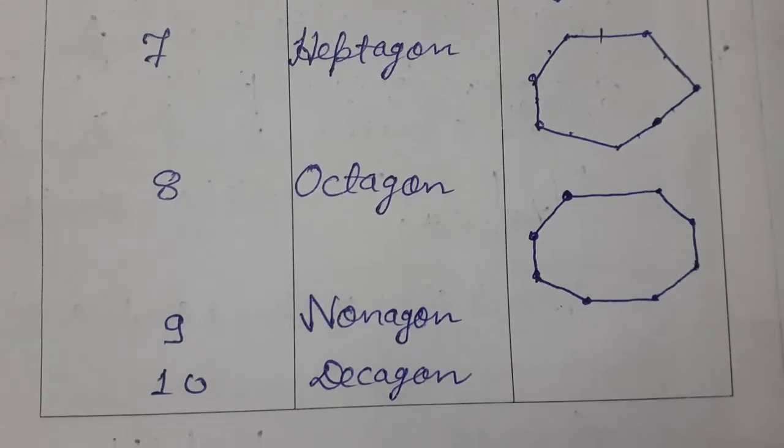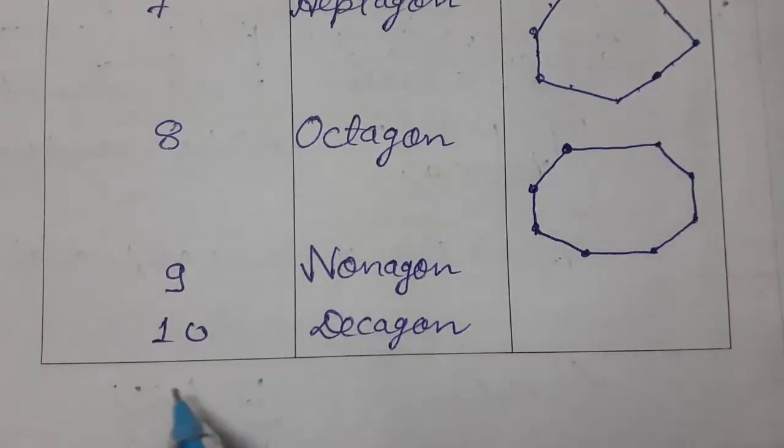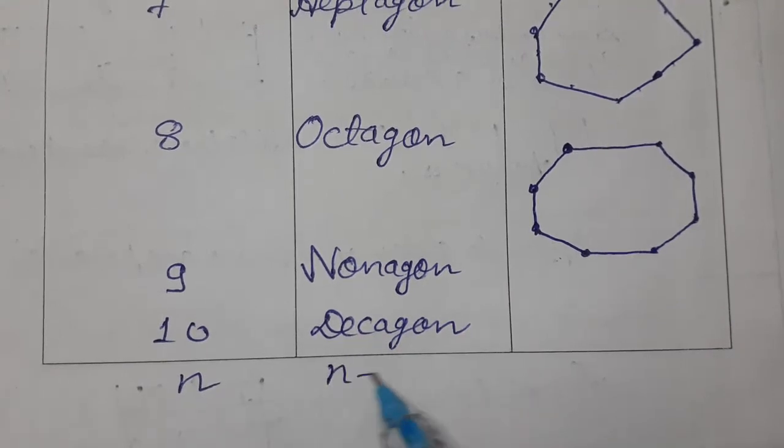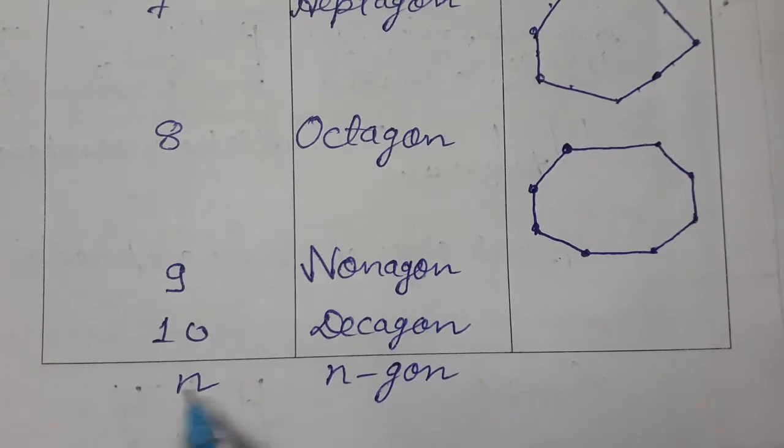And if it contains number of sides and we don't know the number of sides, then it is called N-gon. If sides are not known to us, then we call it N-gon.